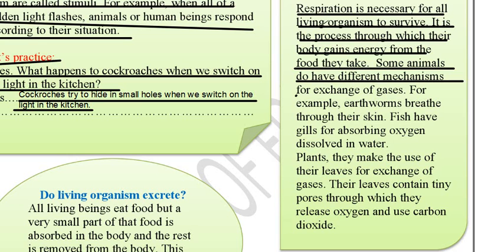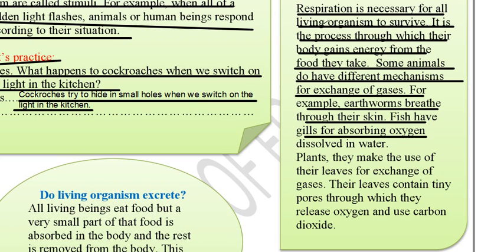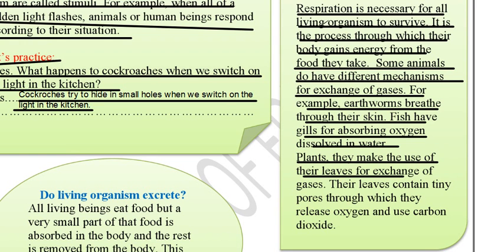Some animals do not have mechanisms for exchange of gases. For example, earthworms breathe through their skin, fish have gills for absorbing oxygen dissolved in water, and plants make use of their leaves for exchange of gases. Their leaves contain tiny pores through which they release oxygen and use carbon dioxide.